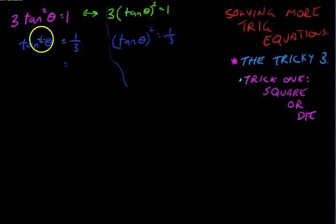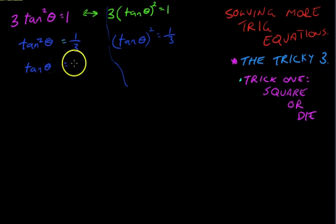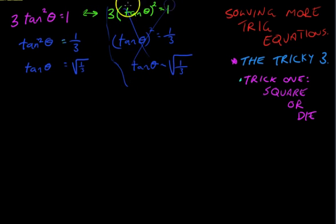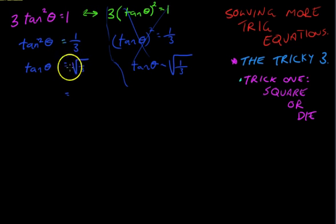The next step is to get rid of the squared. When we get rid of the squared, we do a square root — so we're going to square root both sides. This side just becomes tan theta, and this side becomes the square root of one over three. Now the same thing happens on the other side, and you can see they're now exactly the same. But here's a bit of a problem: the square root of anything is a plus-minus, and this is where the trick comes into it.